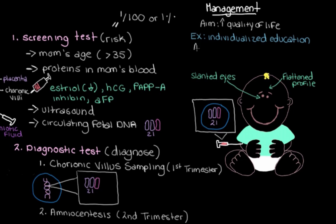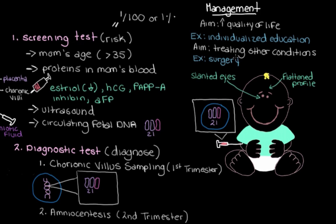People with Down syndrome are at increased risk for many associated conditions, and a big part of management involves treating these. For example, if someone has atrioventricular septal defect — a congenital heart disease common in Down syndrome — they might need surgery. Hearing aids may be needed due to hearing loss, which is also common. Someone with Down syndrome might also be on medications such as anti-seizure medications for epilepsy, another common associated condition.